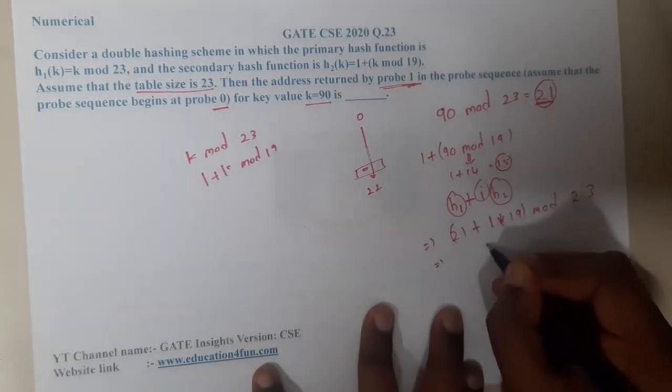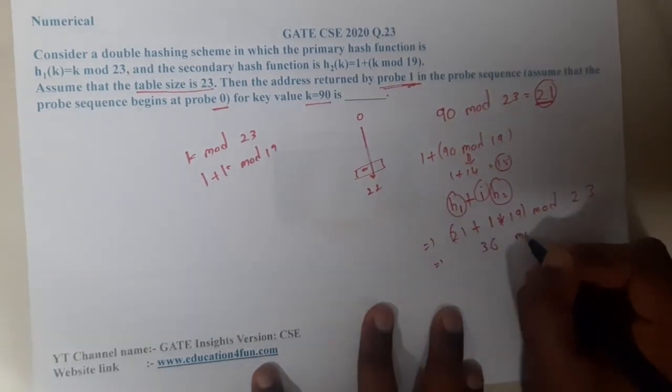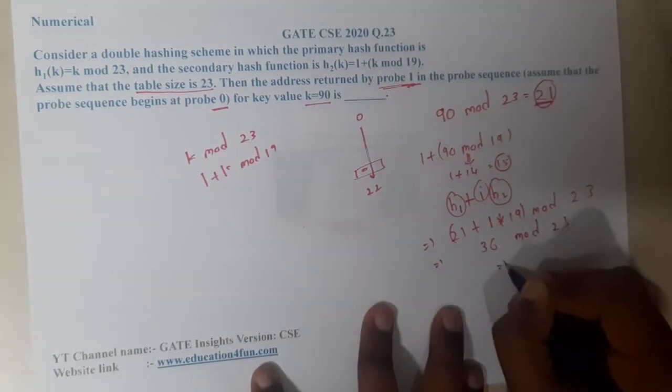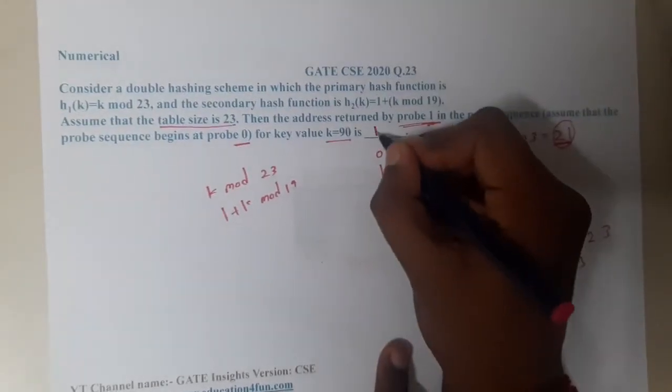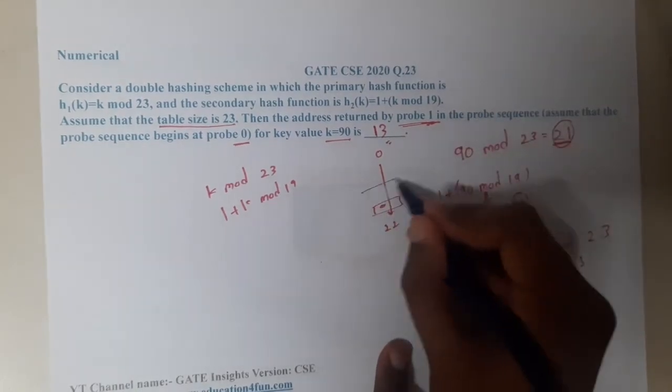What will be the value? 15 + 21 is 36 mod 23. What will be the result? It will be nothing but 13. The answer will be 13. Exactly at 13th slot you will insert that value.